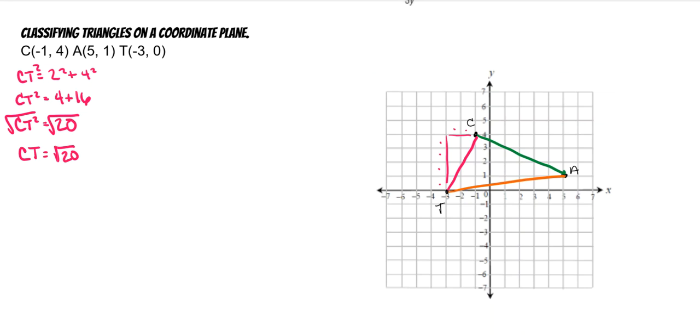All right, let's see if any of the other ones are the same or not. CA squared is equal to 1, 2, 3 squared plus 1, 2, 3, 4, 5. So CA squared is equal to 9 plus 6 squared. CA squared is equal to 45. Square root of both, which means that CA is equal to the square root of 45.